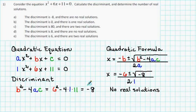So we see that the discriminant is negative 8 and that there are no real solutions. Therefore, a is the correct answer.